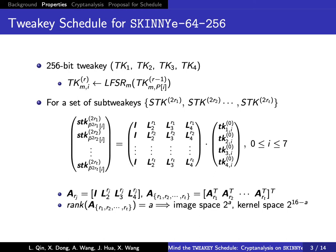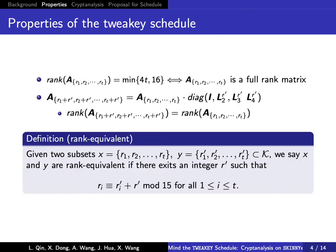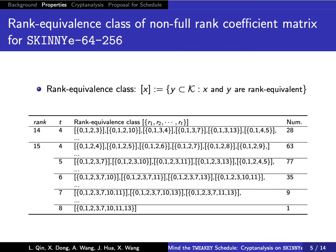Where L_i is a 4×4 binary matrix corresponding to each LFSR. The rank of the coefficient matrix A is of most concern. We find that some A corresponding to different indexes have the same rank, so we introduce the rank-equivalent property and define the rank-equivalent classes.